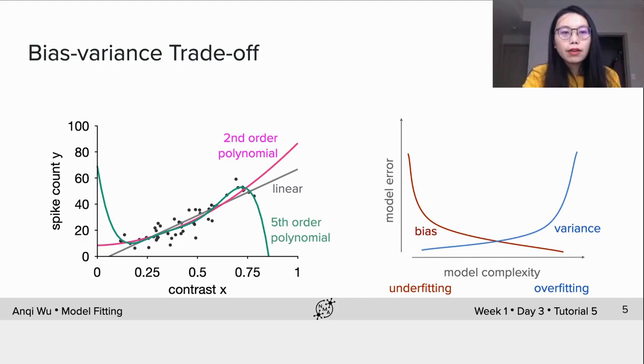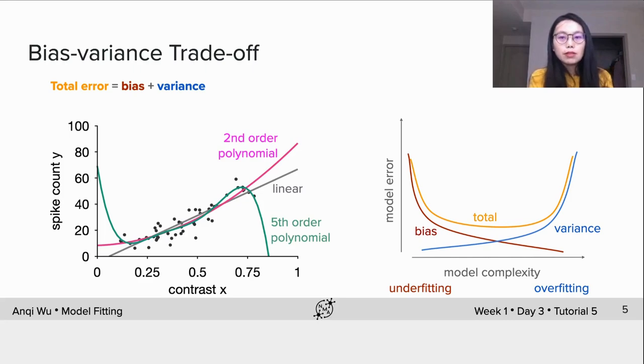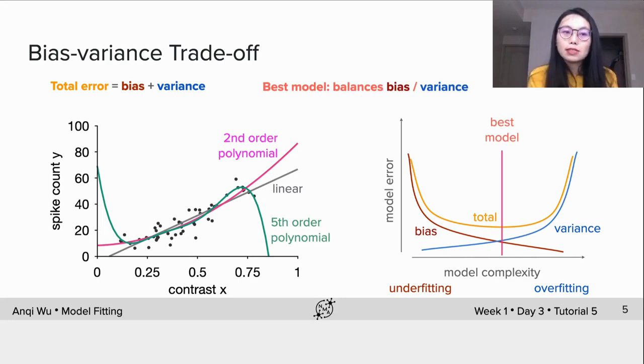On the contrary, the variance increases as the model complexity increases. And we say that the model over fits the data which means trying to fit all the data points when data is very noisy. Thus the variance is high. Here we can see there is a trade-off between variance and bias. We can't use either to select the best model. We can define the total error to be the sum of bias and variance which has a valley in the middle and the best model is chosen when the total error is the smallest.